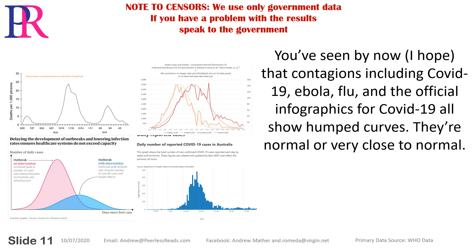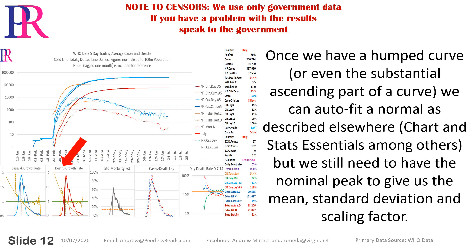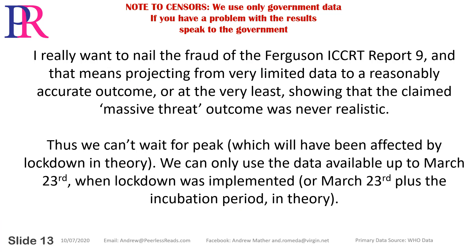By now you've seen that contagions including COVID-19, the flu, and official infographics all show humped curves — they're normal or very close to normal. Once we have a humped curve or even the substantial ascending part, we can autofit a normal as described elsewhere. But we still need the nominal peak to give us the mean, standard deviation, and scaling factor. The goal is to nail the fraud of the Ferguson ICRT Report 9 by projecting from very limited data to a reasonably accurate outcome.